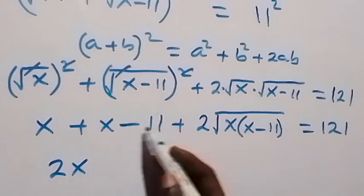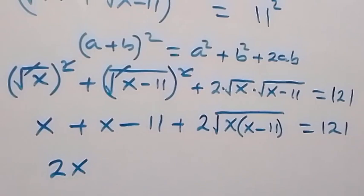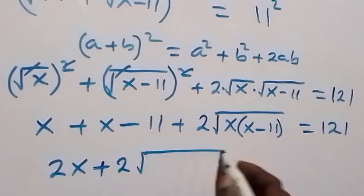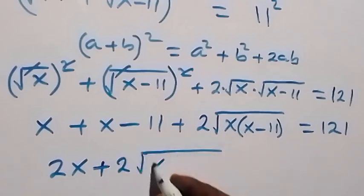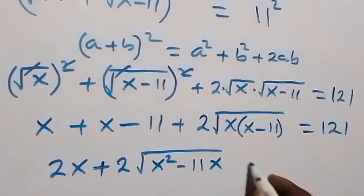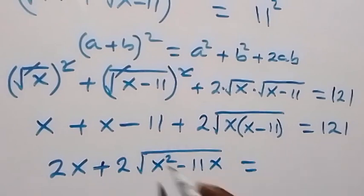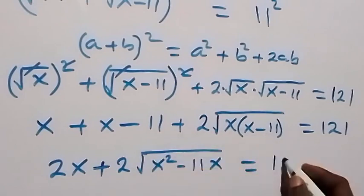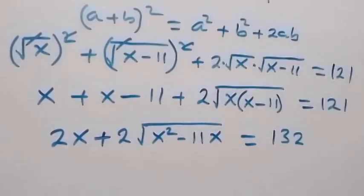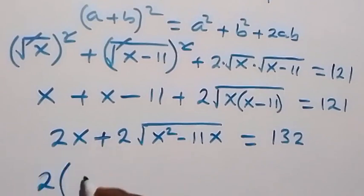We have minus 11, plus 2 times root of x squared minus 11x, equals 121. So we have 2x minus 11 plus 2 root of x squared minus 11x equals 121.